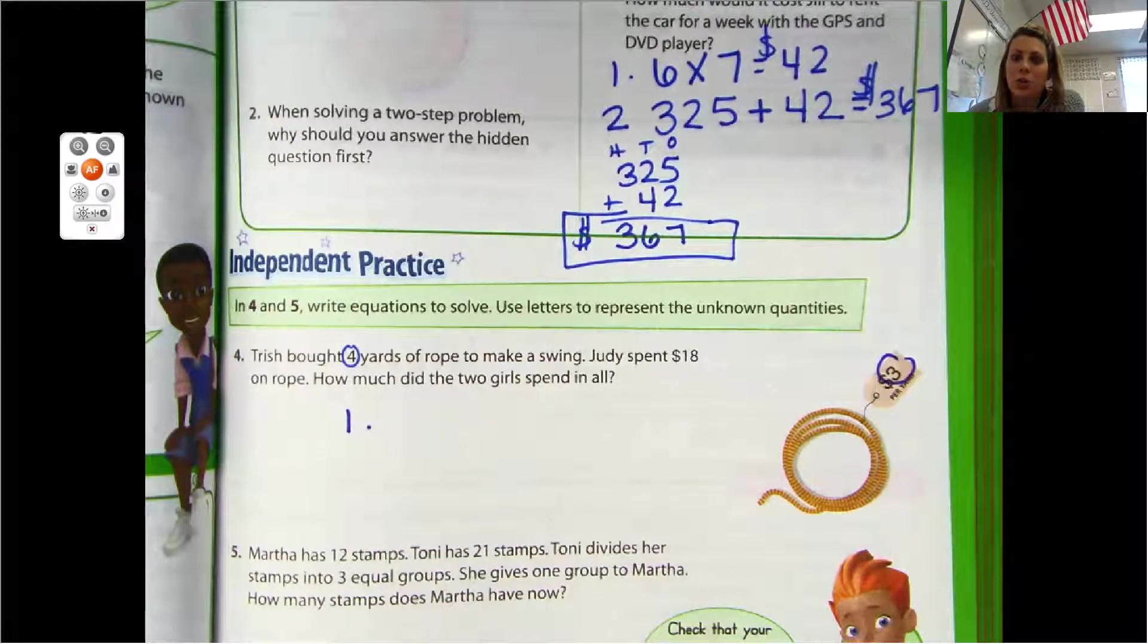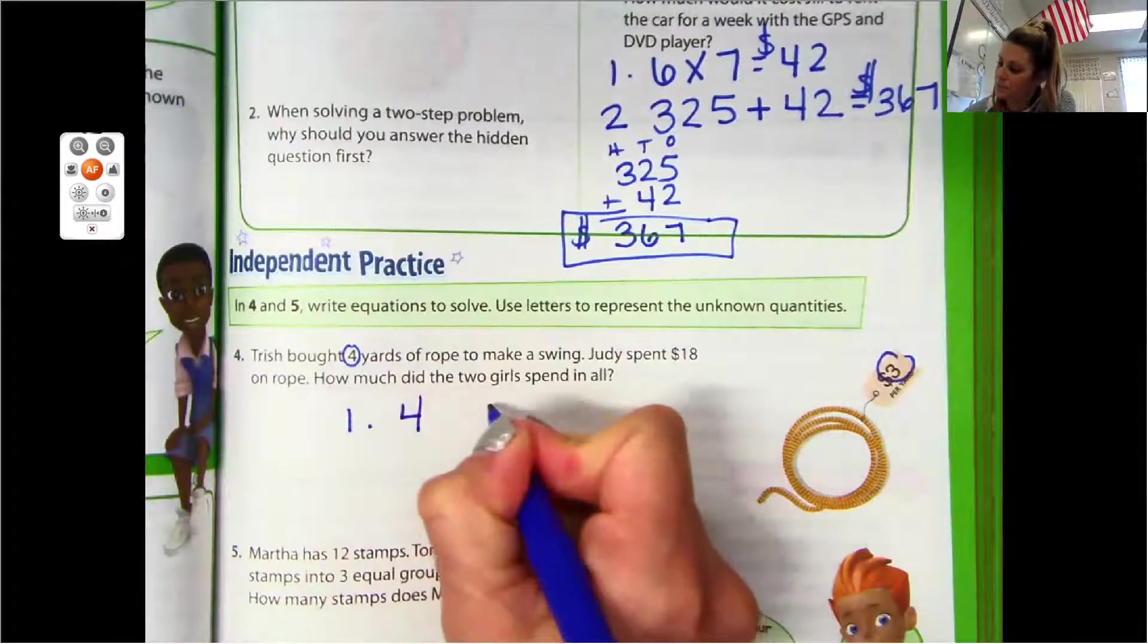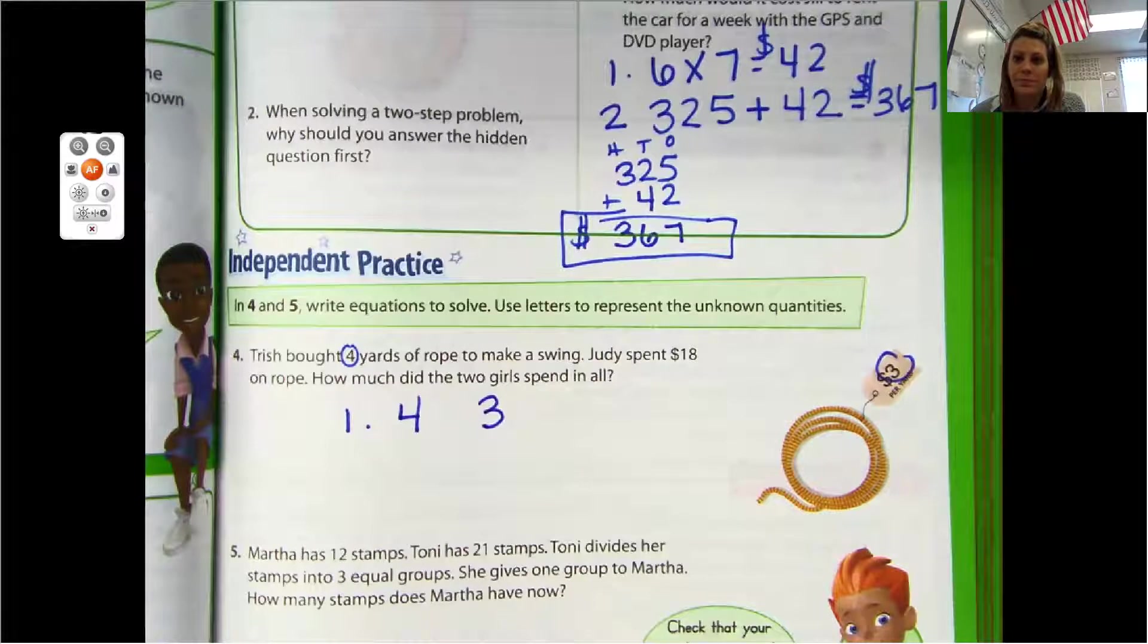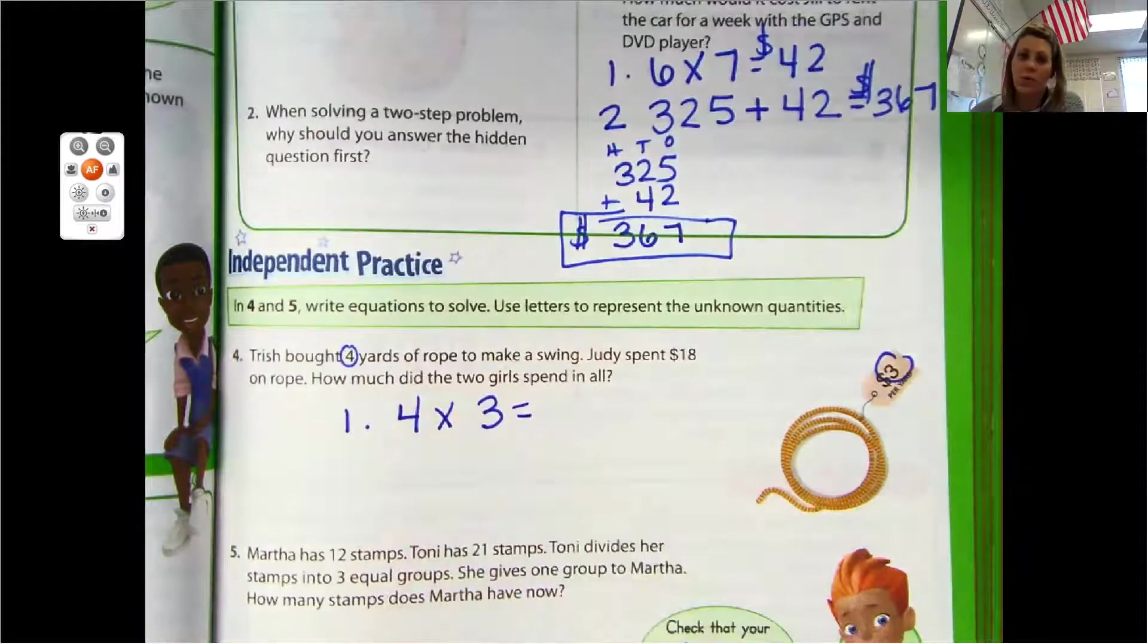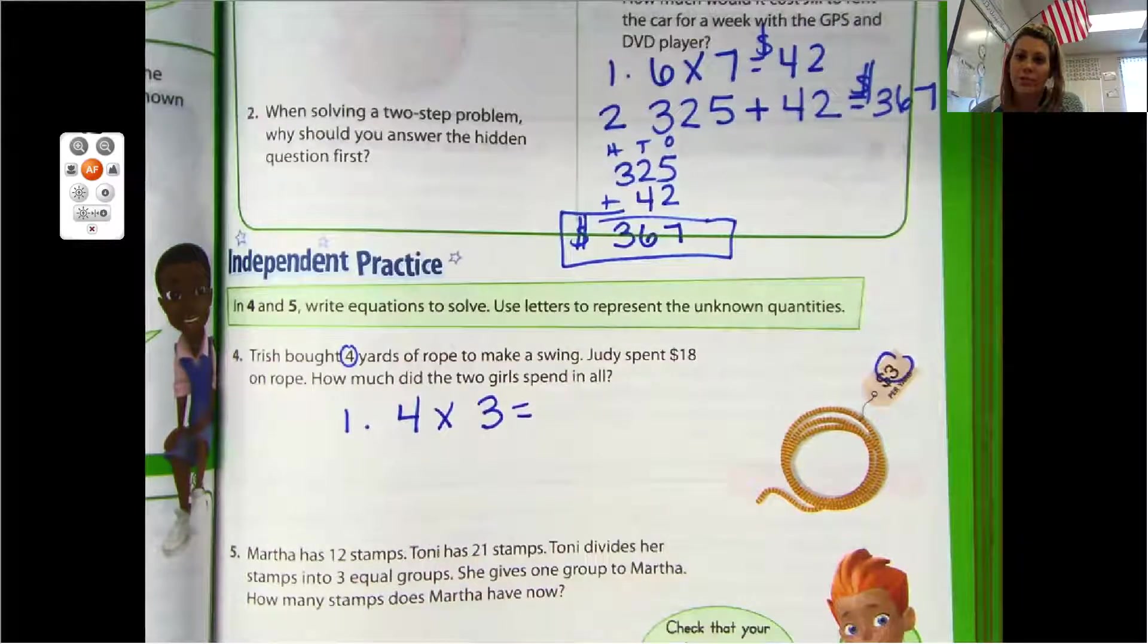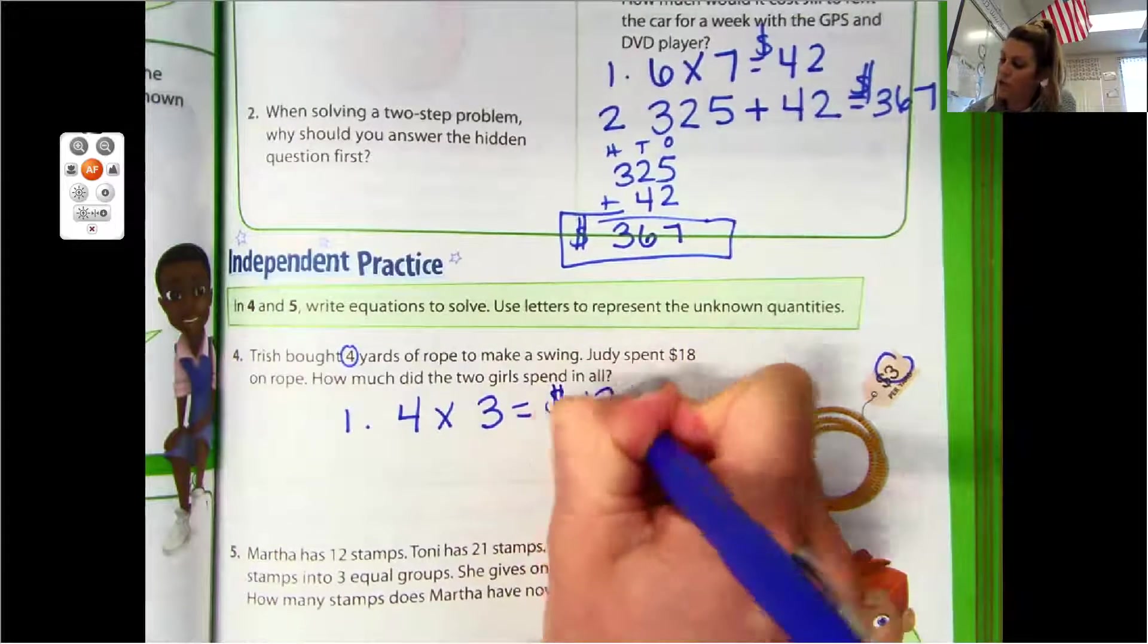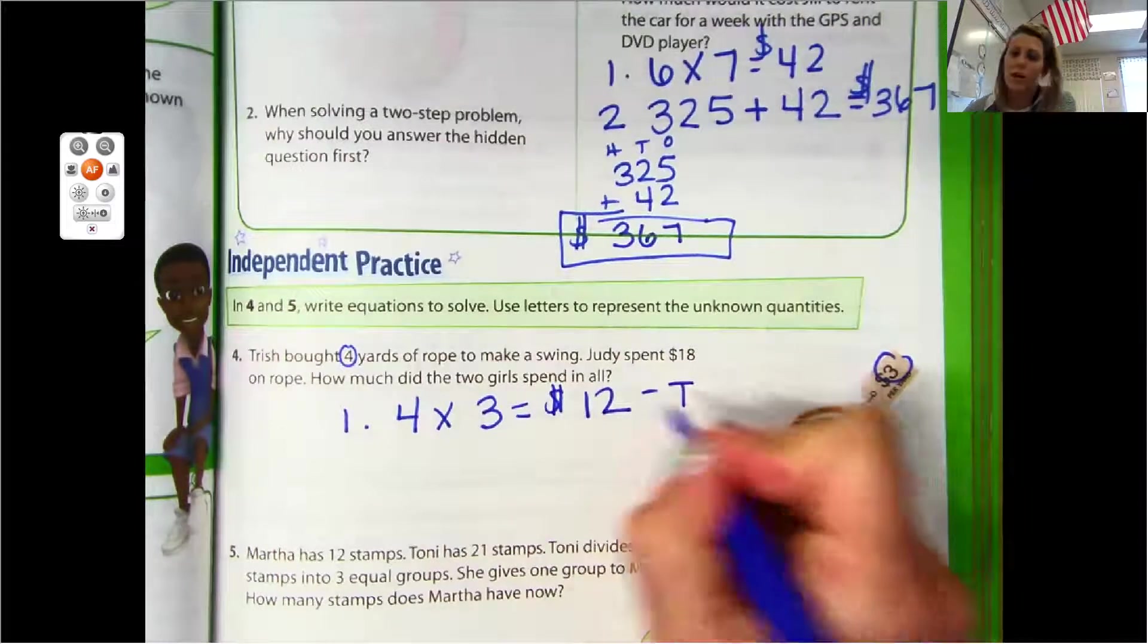So I'm going to use four and three for my first step. What am I going to do with that four and three? Am I going to divide, add, subtract, or multiply? You would multiply. Four times three equals how many dollars? Equals $12. So Trish spent $12.